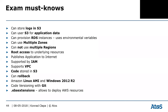It supports Linux AMI and Windows 2012 R2. The EB CLI actually allows you to deploy your application directly from Git. Something worth knowing for the exam are EB extensions — a folder you put in your application where you can define additional AWS resources you want to deploy.